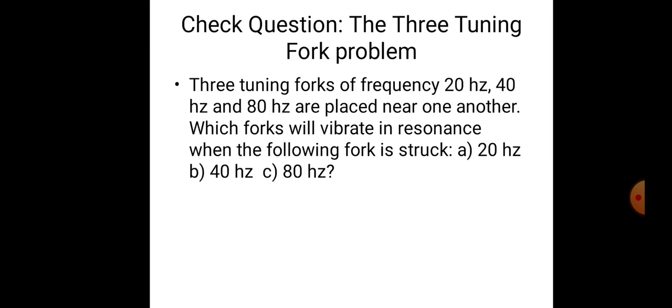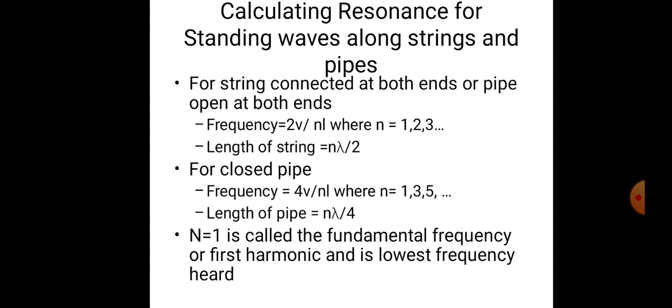Now the tuning fork problem: the applications where resonance may occur involve tuning forks at frequencies of 20 Hz, 40 Hz, and 80 Hz. You have to calculate under which conditions resonance occurs. For standing waves along a string and pipes: a string connected at both ends or pipe open at both ends has frequency f = 2v / nL, where n = 1, 2, 3 and length of string = nλ/2. For closed pipes, f = 4v / nL where n = 1, 3, 5, and length of pipe = nλ/4. n = 1 is called the fundamental frequency or first harmonic — the lowest frequency heard.